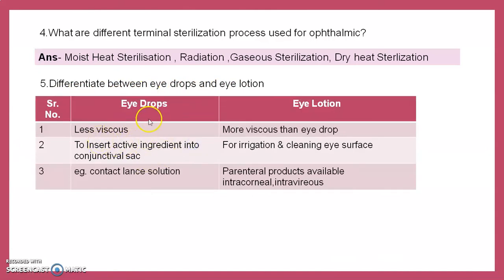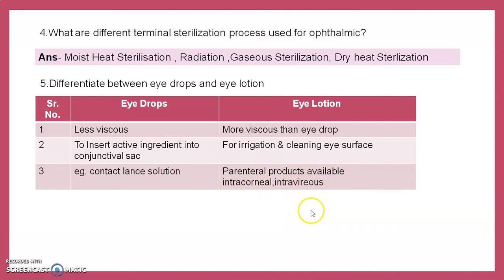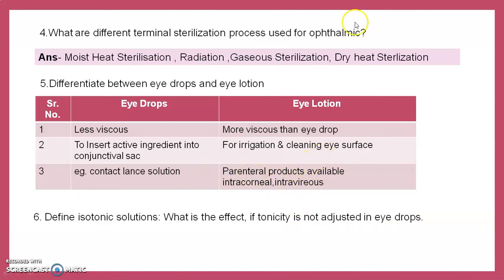What is the difference between eye drops and eye lotions? Eye drops are less viscous; eye lotions are more viscous. Eye drops deliver active ingredients into the conjunctival sacs. Eye lotions are also instilled into the conjunctival sacs but are used for irrigation and cleaning of the eye surface. Eye lotions have more contact time with the cornea because of their higher viscosity.